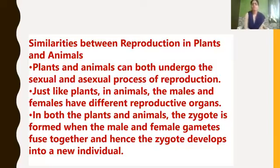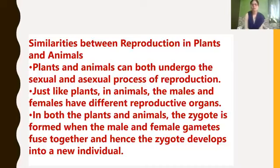What are the similarities between reproduction in plants and animals? Plants and animals can both undergo sexual as well as asexual reproduction. Just like plants, in animals the males and females have different reproductive organs. In plants, the flower is the reproductive part consisting of both male and female parts. The same way in animals, male organisms and female organisms are different — they have separate male and female reproductive organs. In both plants and animals, a zygote is formed when the male and female gametes fuse together, and the zygote develops into a new individual.